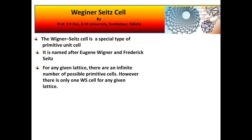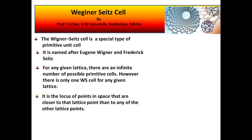For any given lattice there can be an infinite number of possible primitive cells. However, there is only one Wigner-Seitz cell for any given lattice. This unit cell represents the locus of points in space that are closer to the lattice point than to any of the other lattice points.